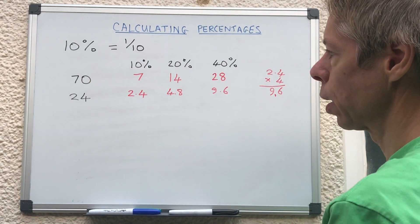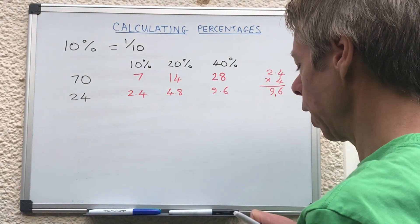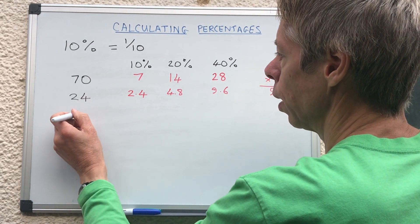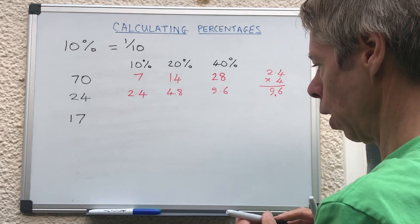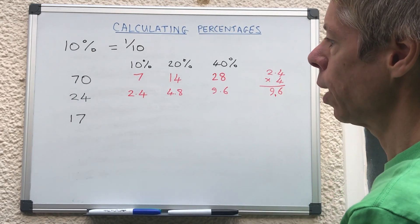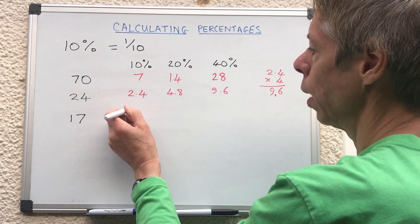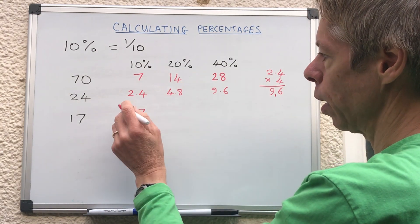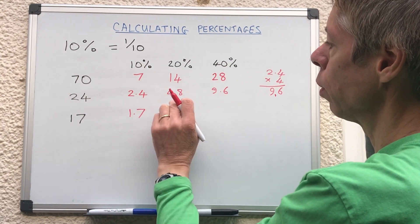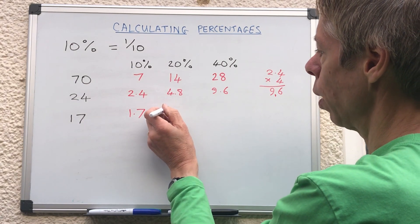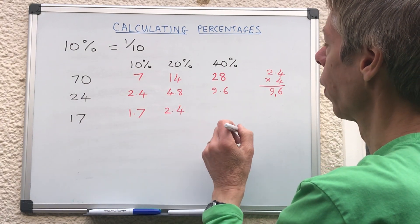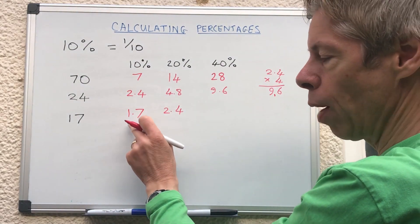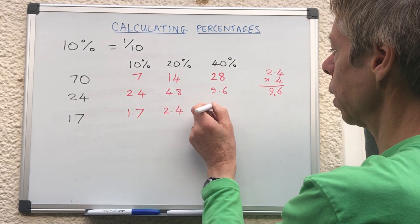What if we had 17? So ten percent of 17 is 1.7. Twenty percent, all we've got to do is double that 1.7 to give us 3.4. Forty percent, we just need to times that by 4. Now I happen to know that four 17s are 68 so I can just put in 6.8.